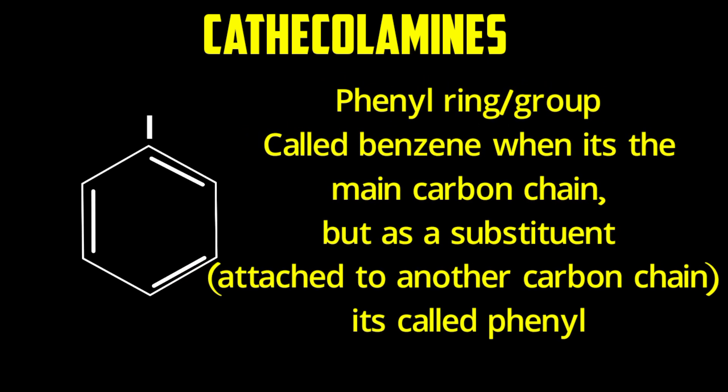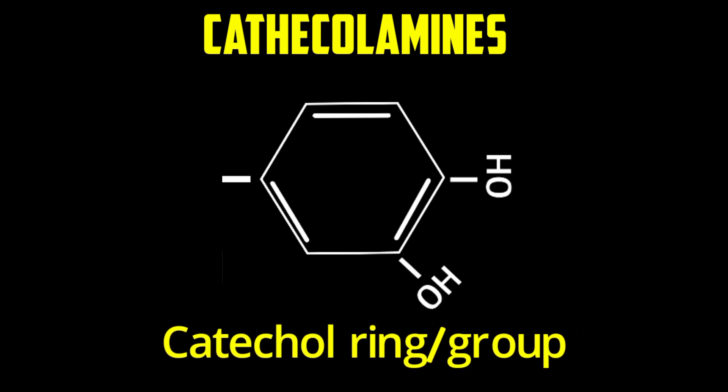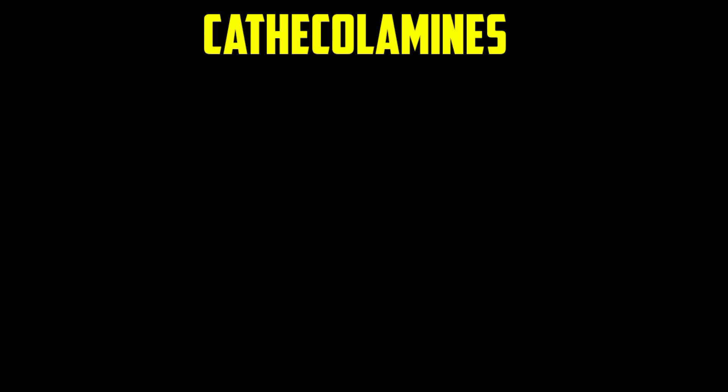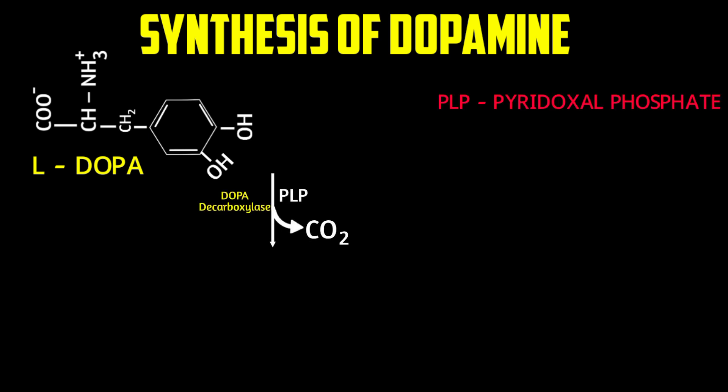The phenyl ring with adjacent OH groups is called a catechol. Catecholamines all contain a catechol group — a phenyl ring (benzene ring with substitution) with adjacent OH groups attached to a carbon chain that carries an amine group. The second step of catecholamine synthesis is the decarboxylation of DOPA to form dopamine, removing CO2.